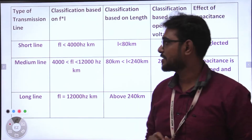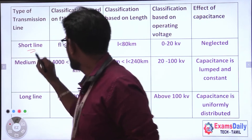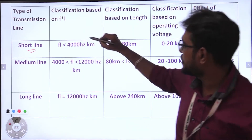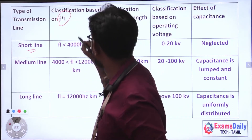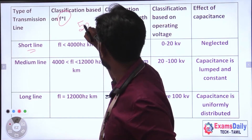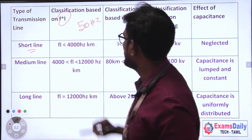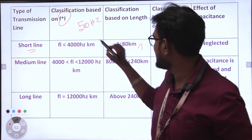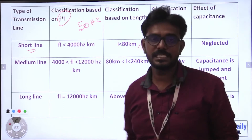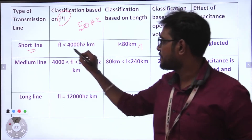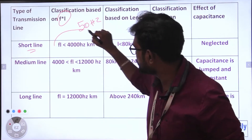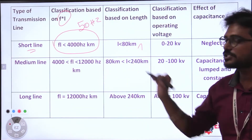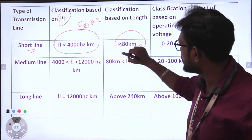The first line is the short transmission line. Short transmission line is classified based on frequency and length. We know frequency in India is 50 Hz. For length, short transmission is 80 km, so 50 into 80 equals 4000 Hz per km. The frequency-length product range is less than 4000, meaning it is a short transmission line — that is, less than 80 km.